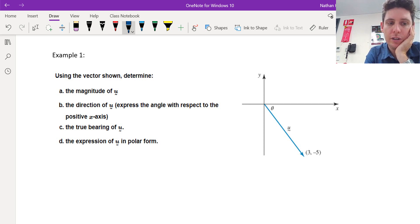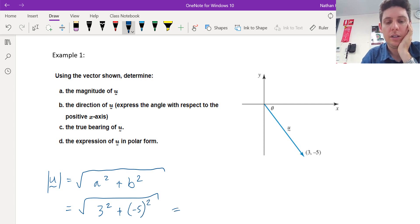So we need to use Pythagoras. We need to do the a squared, which is the x length, plus b squared, which is the y length. For this example, the a squared is 3 squared. The b squared is negative 5. So 9 plus 25, we have a magnitude of 34, square root 34.